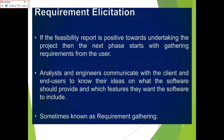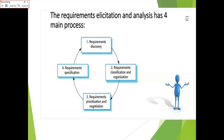The next phase is requirement elucidation, which means gathering the requirements of that particular system. If the feasibility report is positive towards undertaking the project, the next phase starts with gathering requirements. In this phase, the analysts and engineers communicate to discuss the ideas the software should provide and what functionality and features they want. Requirement elucidation is also known as requirements elicitation. It has four basic parts: requirement discovery, requirement classification and organization, requirement prioritization and negotiation, and the last one is specification.